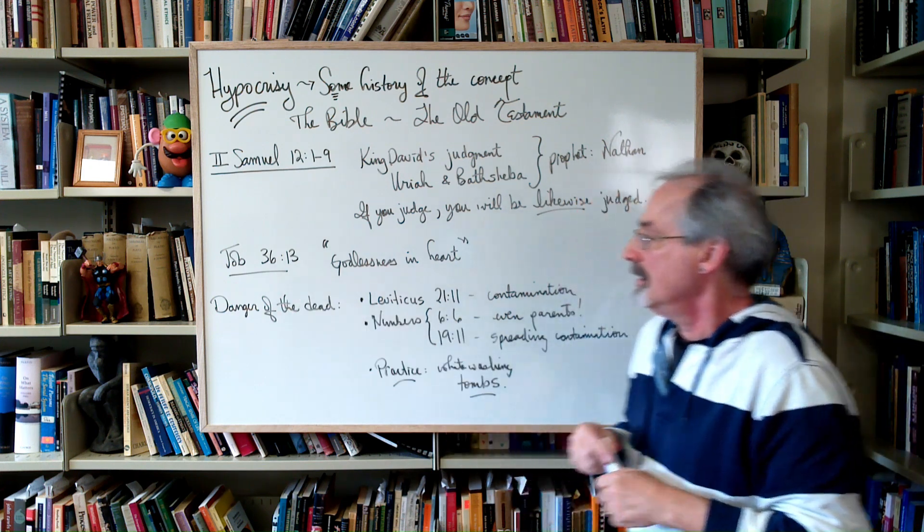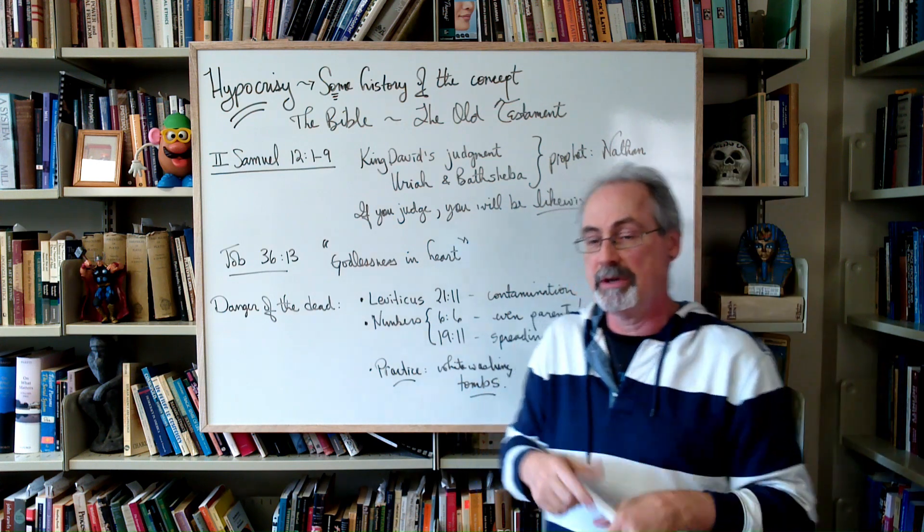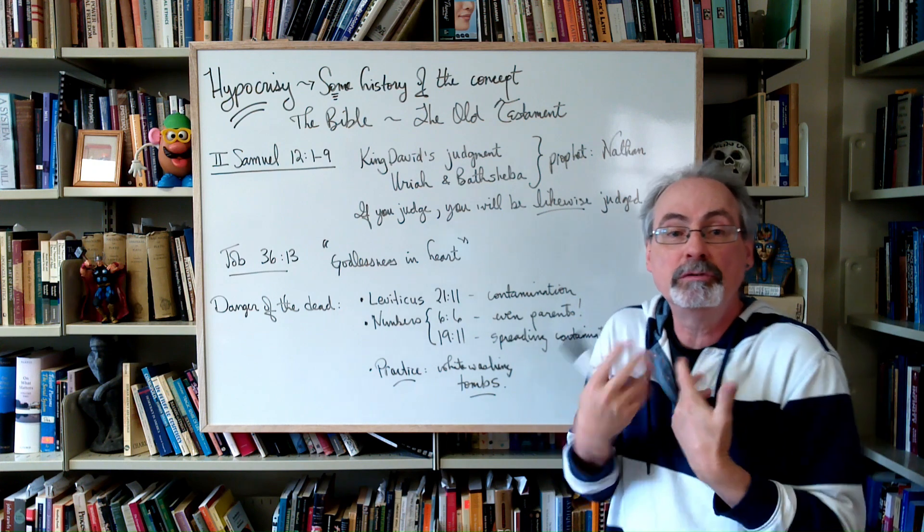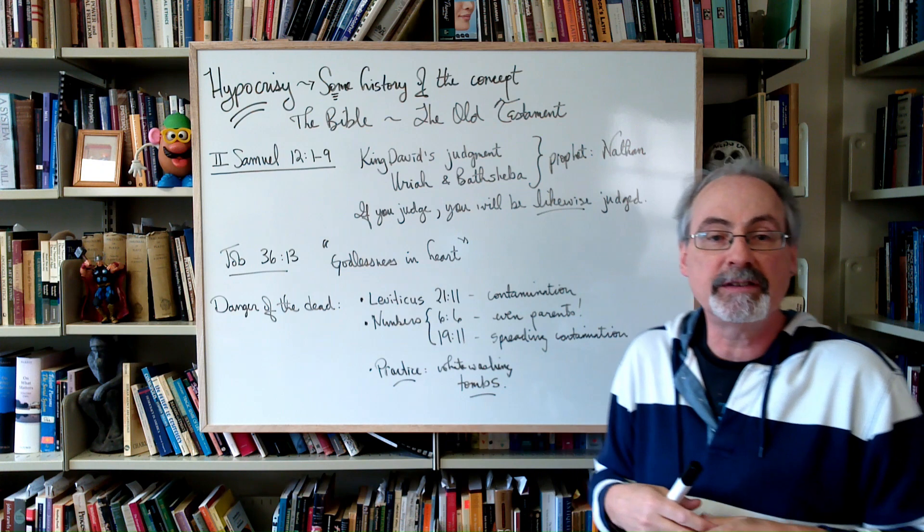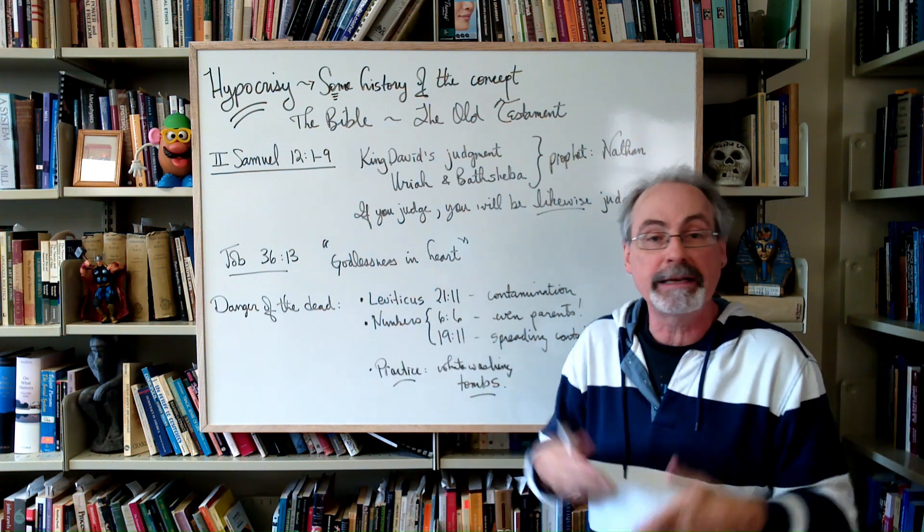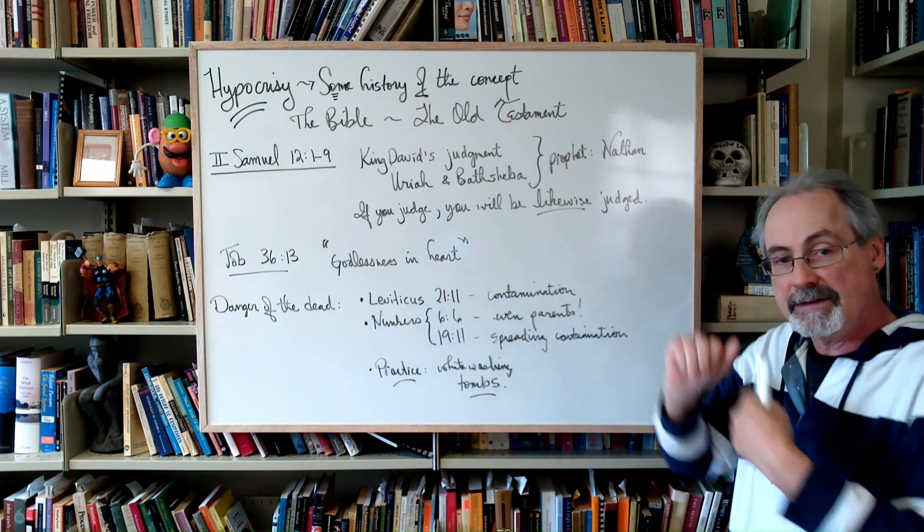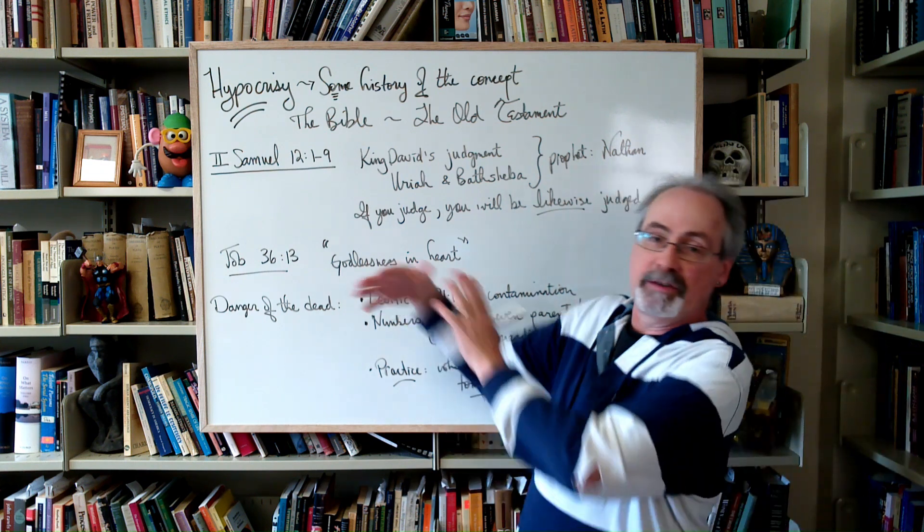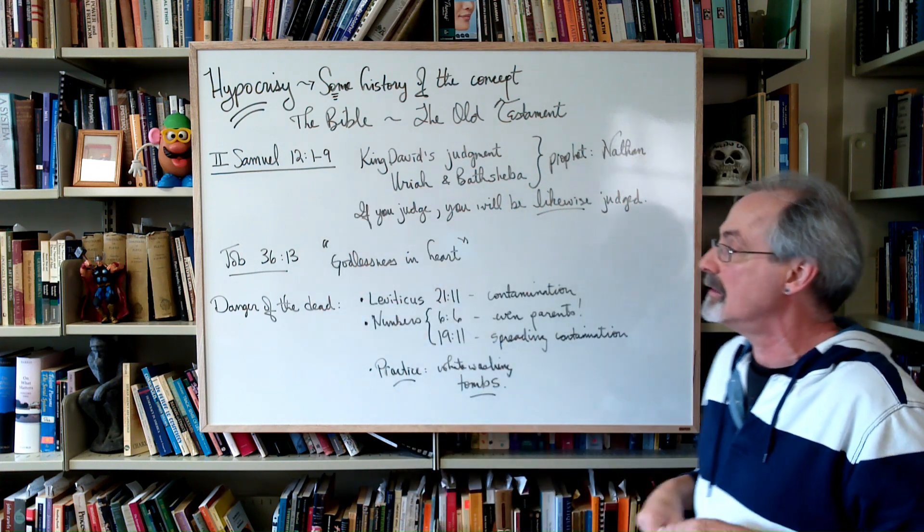In Job there is this sort of dichotomy picked up that we saw in the previous video with Greeks. That the hypocrite is godless in heart. Now you can read that as just simply a straightforward atheism, but it might be devoid of morality or whatever. However you want to read that. But again, it's picking up on this kind of a dichotomy. So there's more stuff in the Old Testament you can check out, but that's a little bit of a beginning.